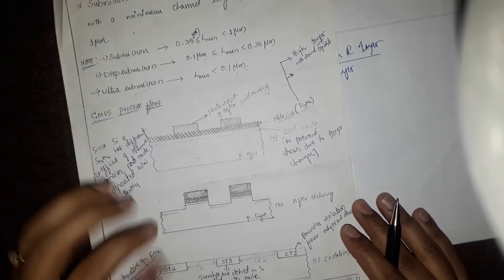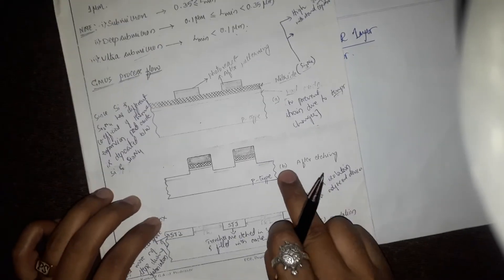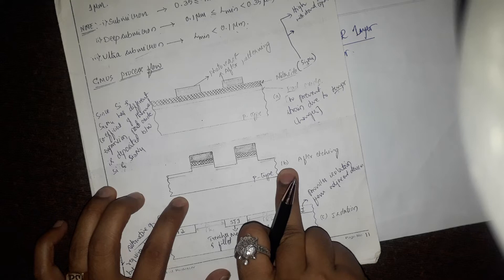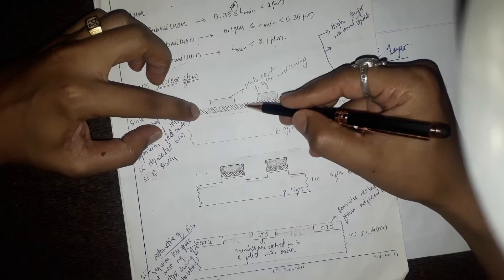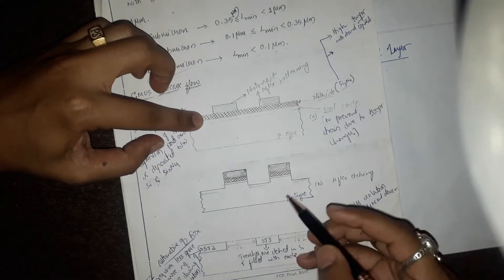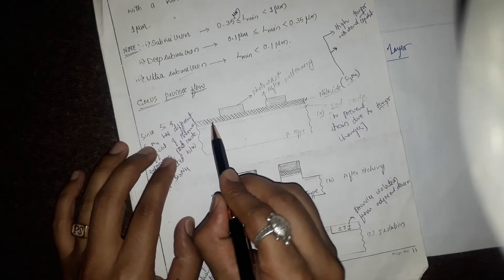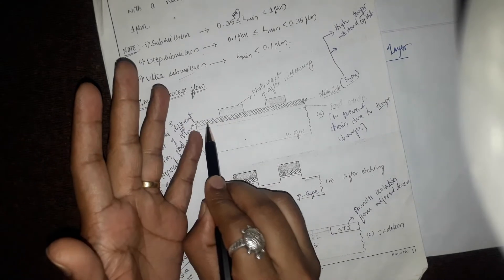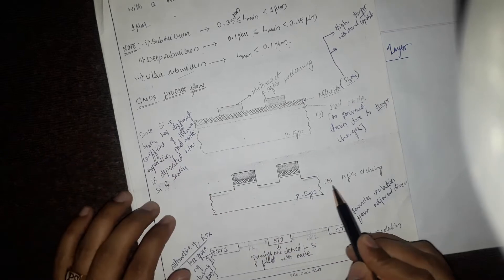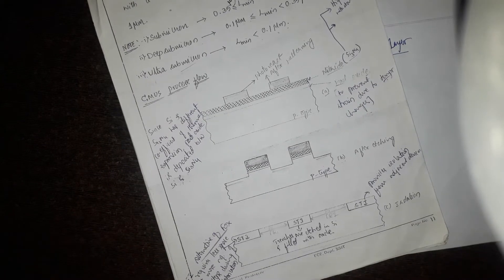A mask is placed, and through the mask the arrangement is exposed to UV radiation, giving the structure shown in figure B. Since a positive photoresist is used, whatever area is exposed to UV radiation becomes soluble and can be easily etched off using developers. After etching off the silicon nitride and pad oxide exposed to UV radiation, you get the structure shown in figure B.